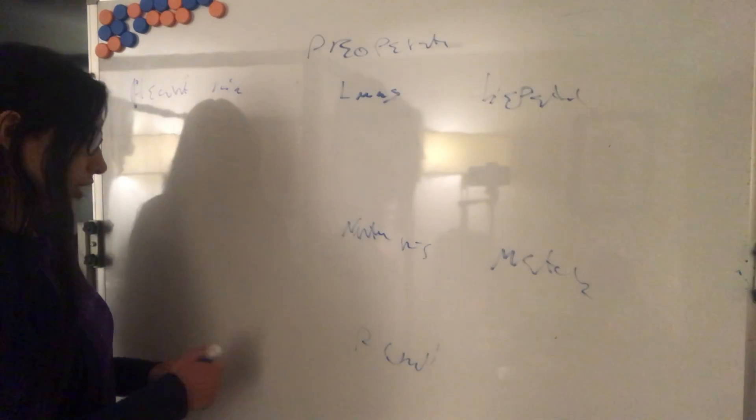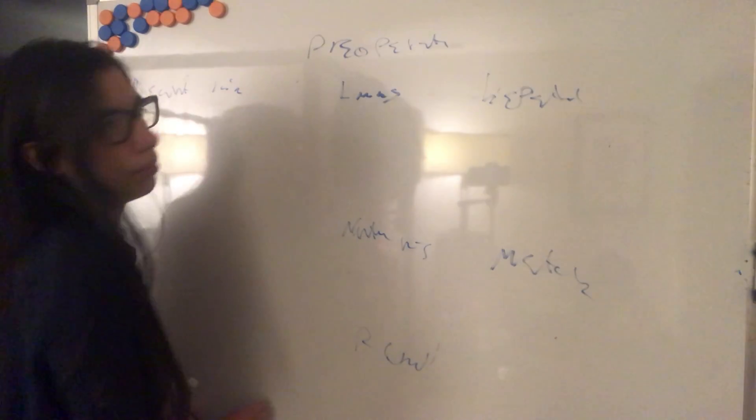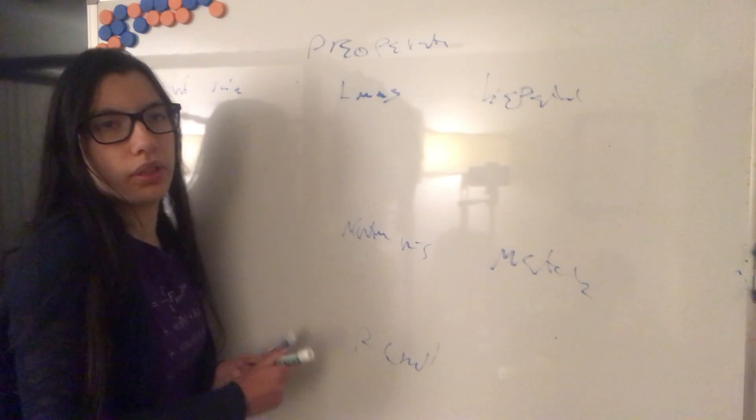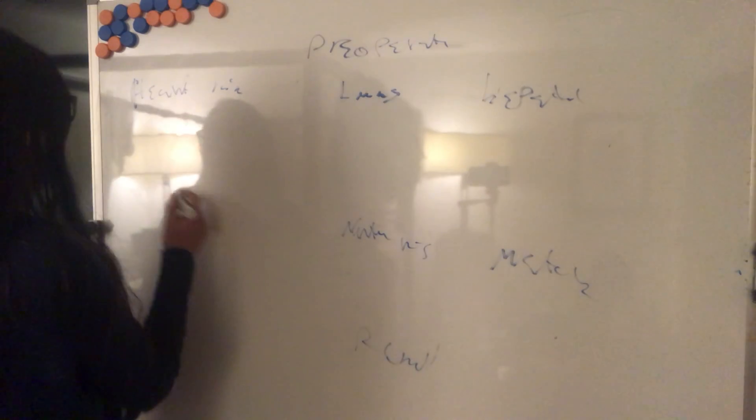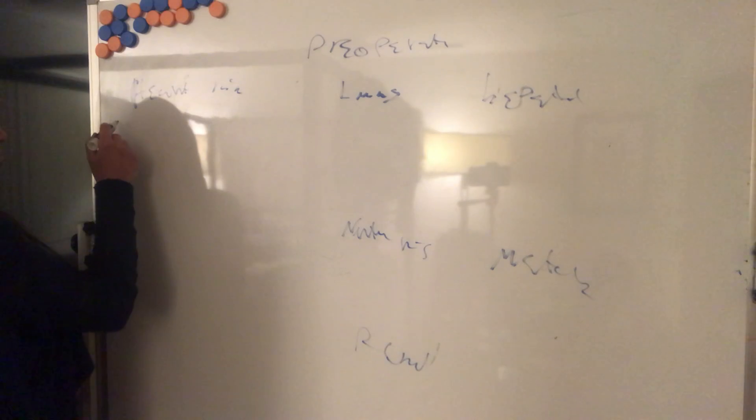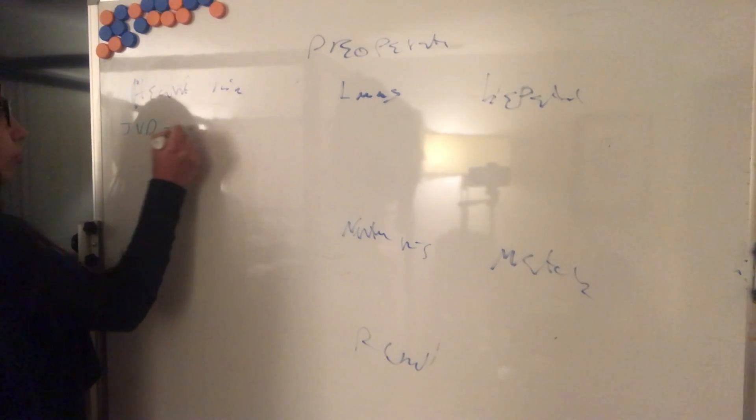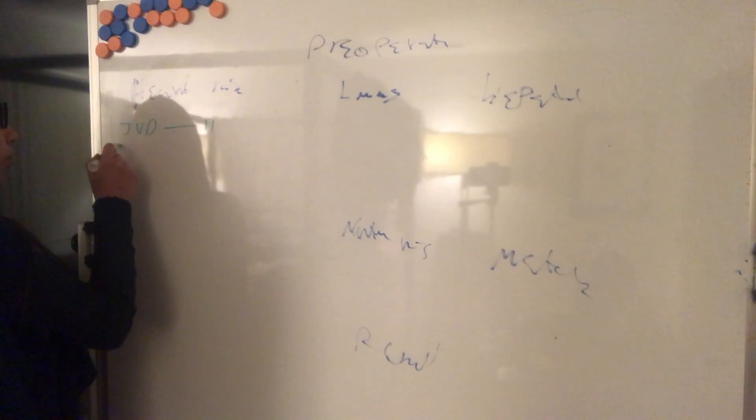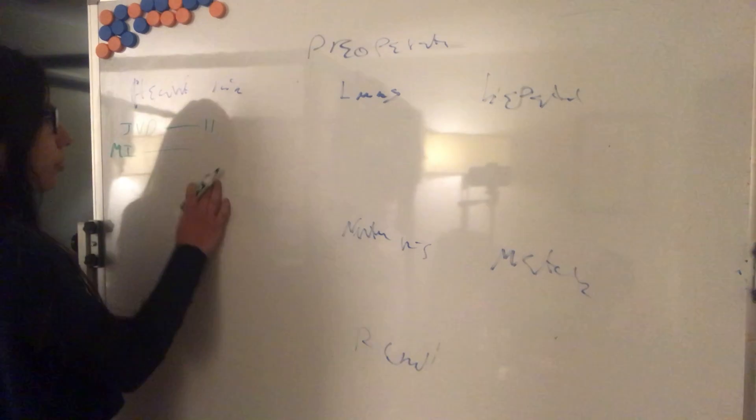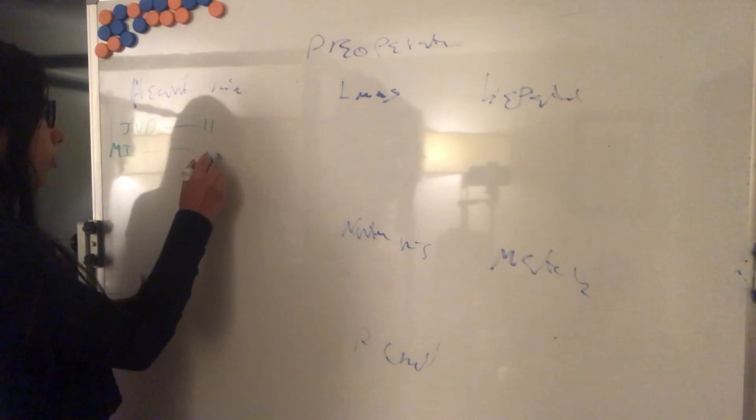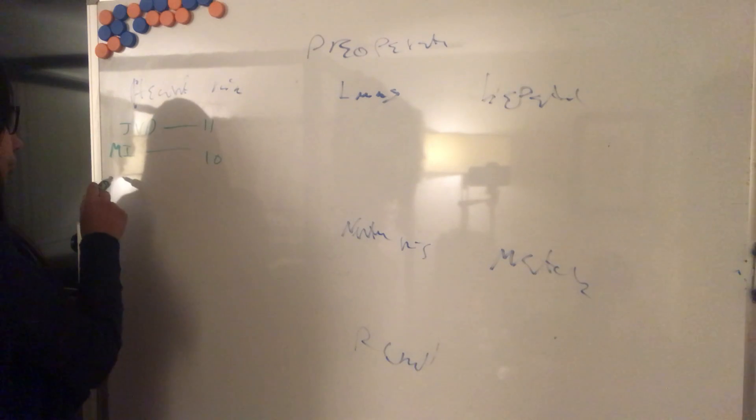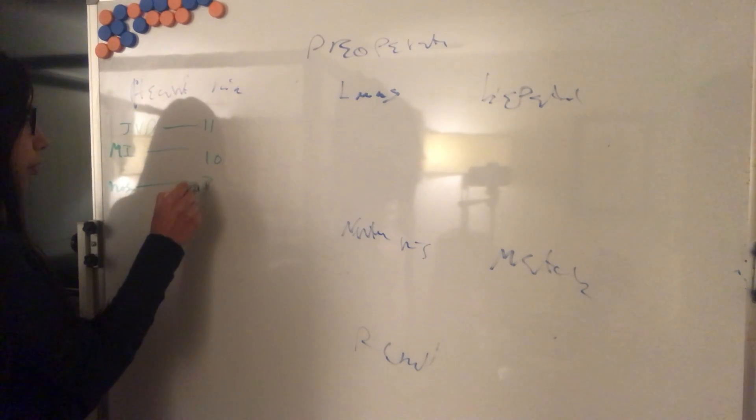For the heart risk, I will begin by saying the Goldman scale. Remember we have jugular venous distension, 11 points, prior myocardial infarction between the first six months, 10 points, non-sinus rhythm, 7 points.